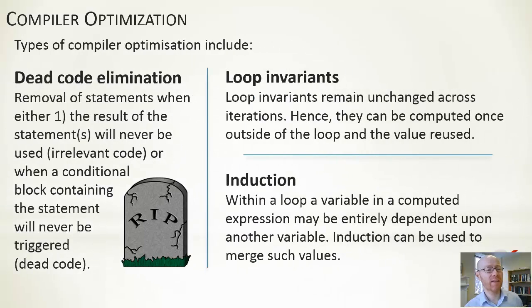A few other things: dead code elimination. Ideally, we shouldn't put these in as developers anyway when we're writing it. But removal of statements when either the result of the statement will never be used, that's known as irrelevant code. So you've written something, you give something a value or calculate something, but you then never actually use that thing later on. Or when a conditional block containing the statement will never be triggered, and sometimes that can be a little bit more hard to discern, known as dead code. If an if condition can never ever be true, there's no point emitting instructions for that. It's just going to waste memory.